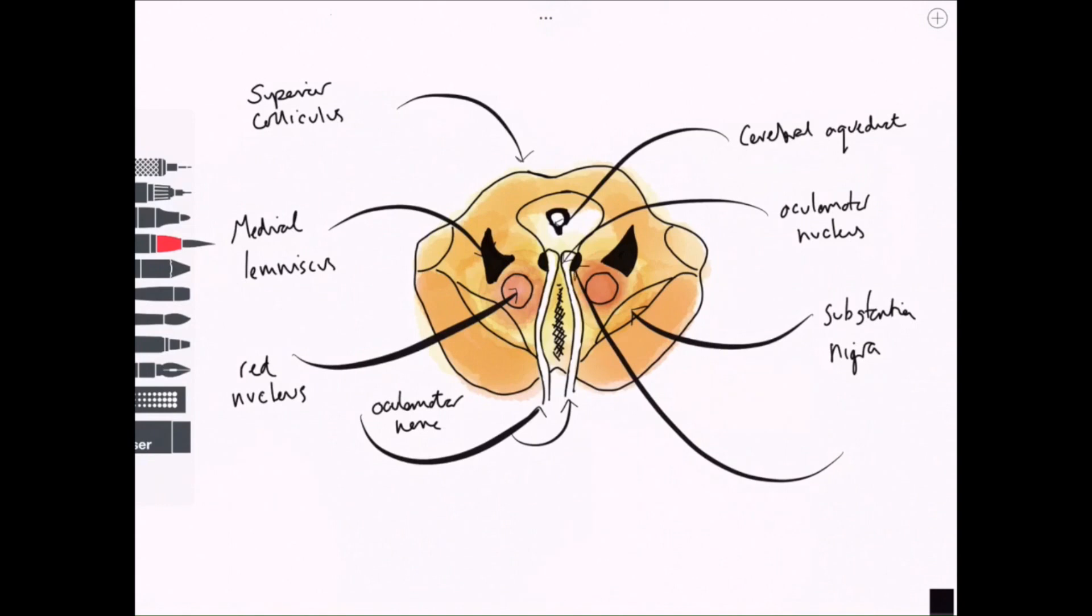We've got the oculomotor nucleus more centrally there. And of course, that's motor outflow to the oculomotor nerve. We also have the medial longitudinal fasciculus. This is a pathway which is involved in the coordination of eye movements. And so we can see the fibres at that level. So these are the important structures to recognize at the level of the superior colliculus.